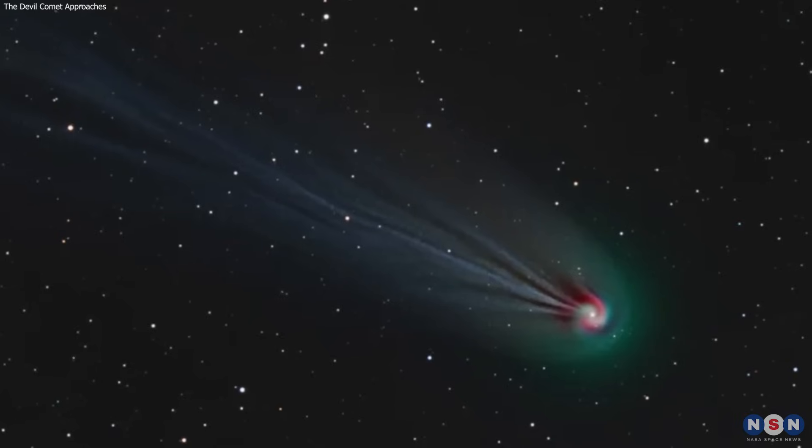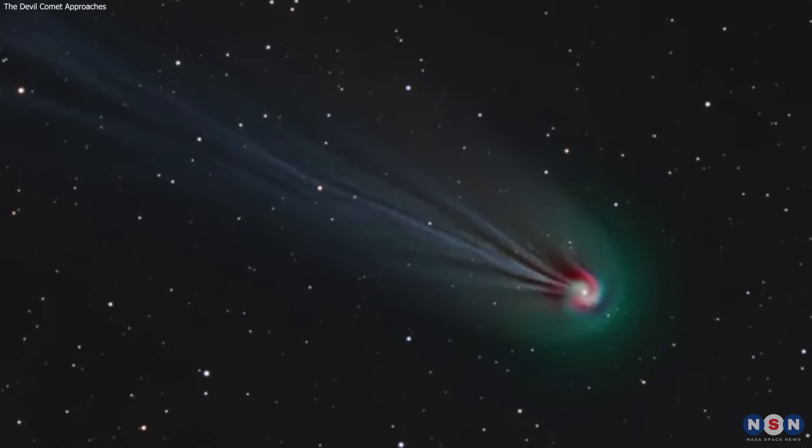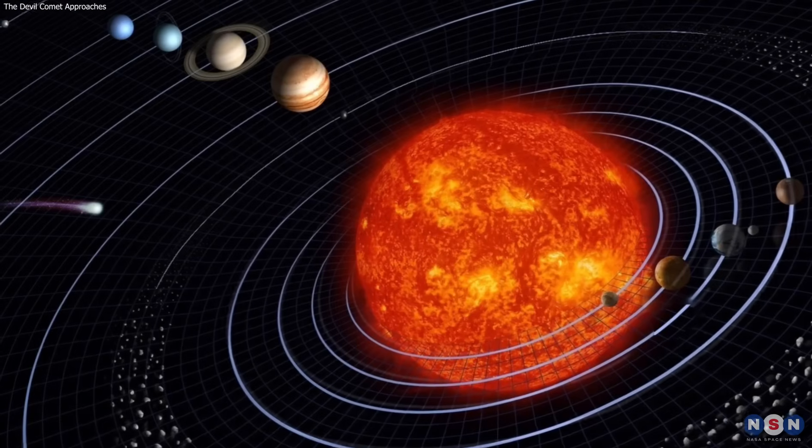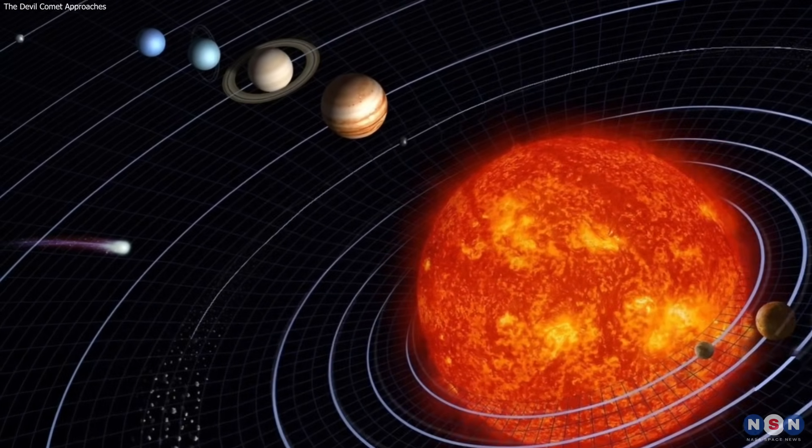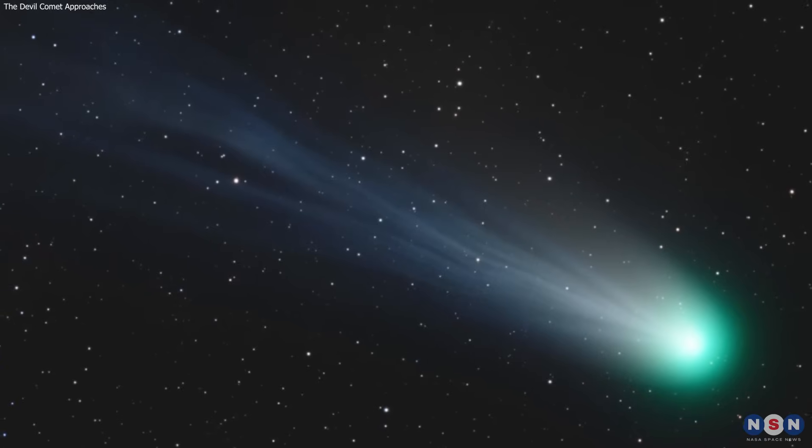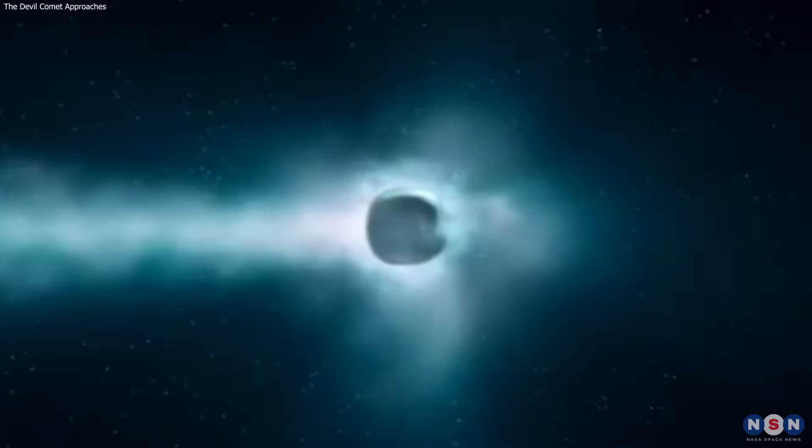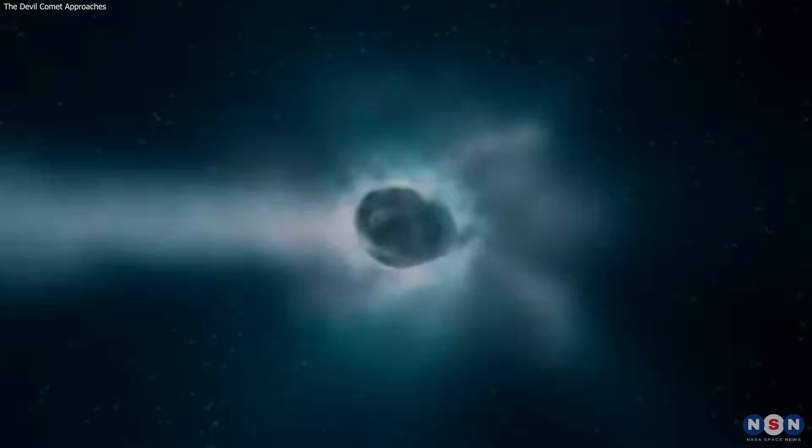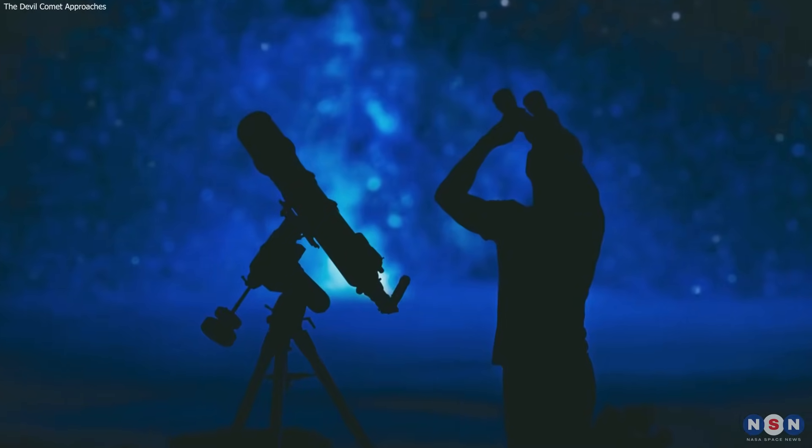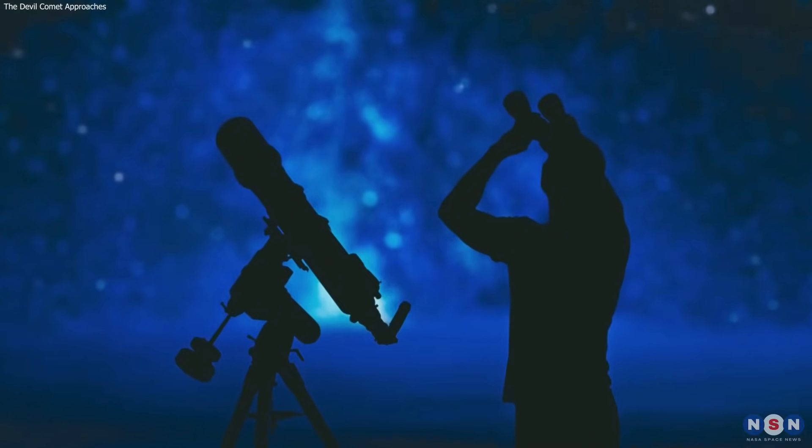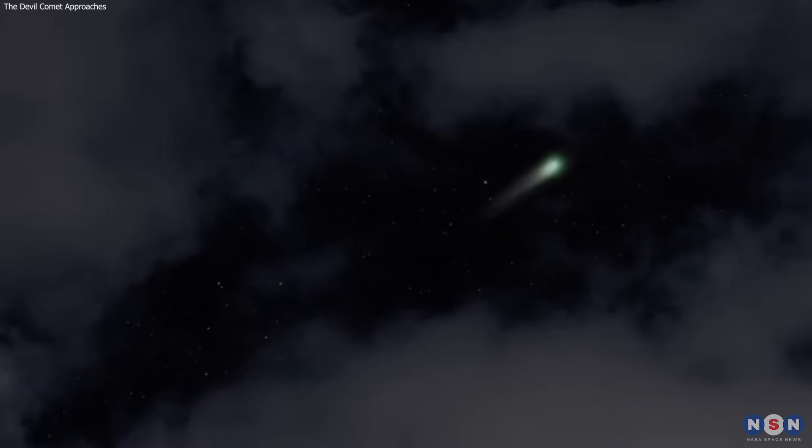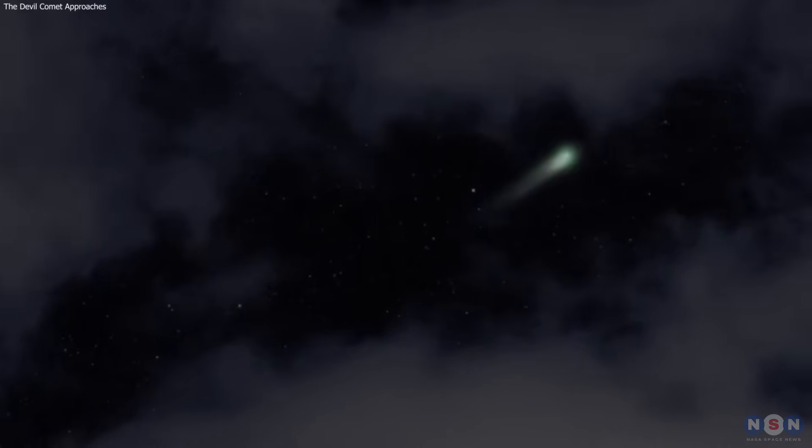As we anticipate the celestial ballet of comet 12P Pons-Brooks, we're reminded of our universe's dynamic and ever-changing nature. This Devil Comet, with its hidden spiral and cryovolcanic outbursts, offers a rare glimpse into the icy depths of space. So, keep your eyes on the skies and join us in marveling at the cosmic wonders that await. Thank you for watching, and remember to subscribe for more astronomical adventures.